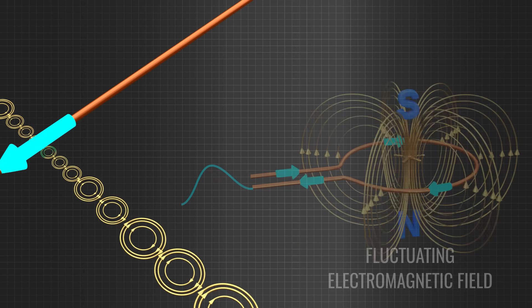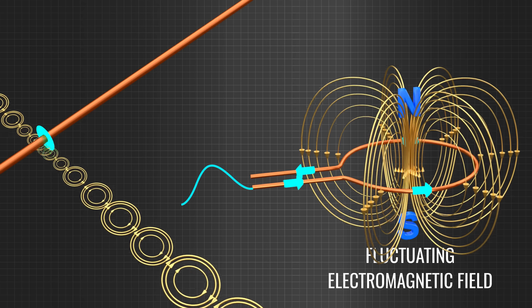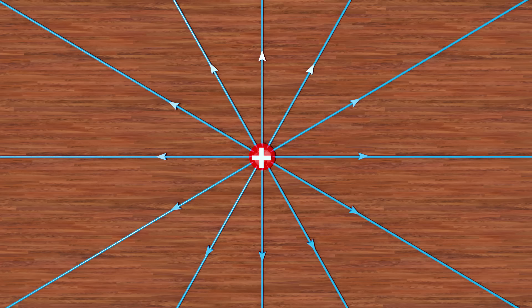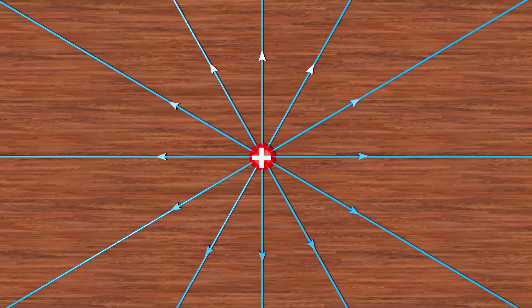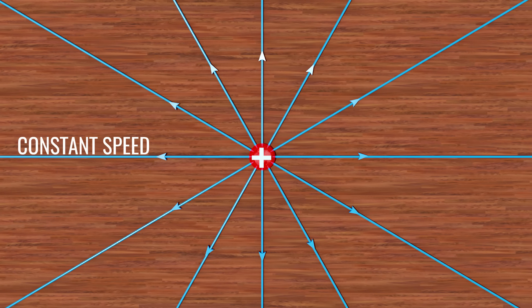More specifically, what we need is a traveling electromagnetic wave and not a fluctuating one. Let's explore this logically. Consider an electric charge, which is moving at a constant speed. The electric field around it is shown.